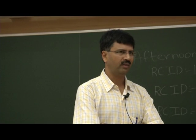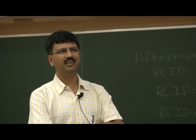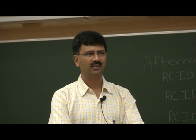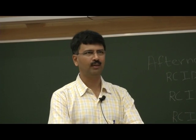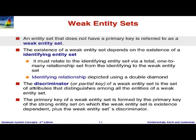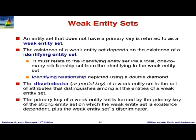We could have added the double box notation. Part of the reason we did not is that standard UML tools do not have a way to draw a double box or a double diamond. Coming back to the notation: we have a notion of a weak entity set and an identifying entity set for it. You can have more complex situations where you have multiple identifying entity sets for a single weak entity set, which together uniquely identify it.